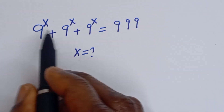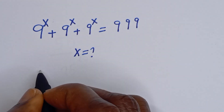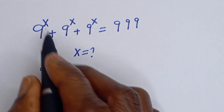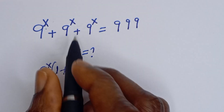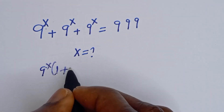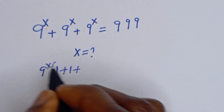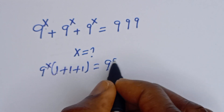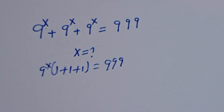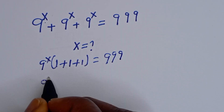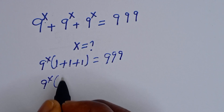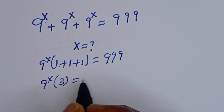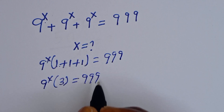Here, 9 to the power of S is common. Let's bring it out. We have 9 to the power of S bracket — dividing each term gives us 1 plus 1 plus 1 — which equals 999. So this is 9 to the power of S times 3 is equal to 999.